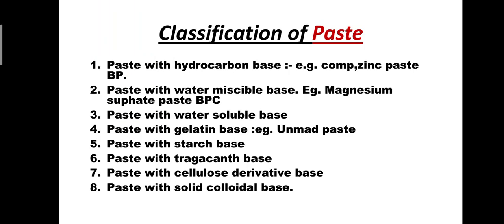Classification of pastes according to their bases: first, pastes with hydrocarbon base (e.g., zinc paste BP); second, pastes with water-miscible base (e.g., magnesium sulfate paste BPC); third, pastes with water-soluble base; fourth, pastes with gelatin base; fifth, pastes with starch base; sixth, pastes with tragacanth base; seventh, pastes with cellulose derivative base; eighth, pastes with solid colloidal base.